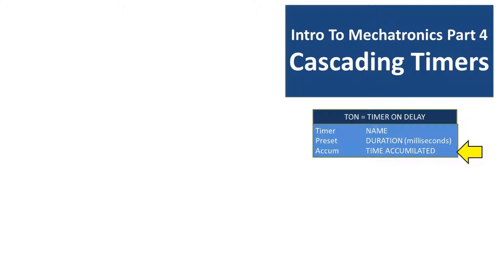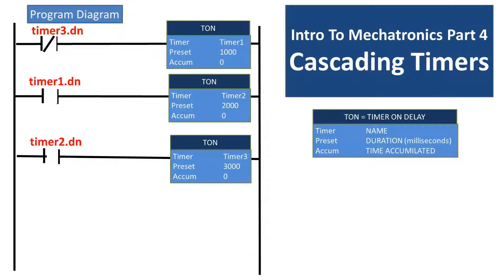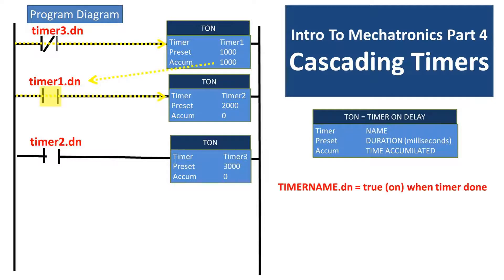Once this value reaches the duration value, the timer reports a false or off state. To the left, I have a program ladder diagram that has cascading timers on it, or timers that go off one after the other. I put a normally closed connection at the beginning, which will start the program off, and timer1 will run for one second, or 1000 milliseconds. To start the next timer, we'll be using timer1.done, which is true or on when the timer is done. After timer1 is done, this will activate the second rung, normally open contact, connecting it and starting timer2 up until it goes to the accumulated value of 2 seconds.